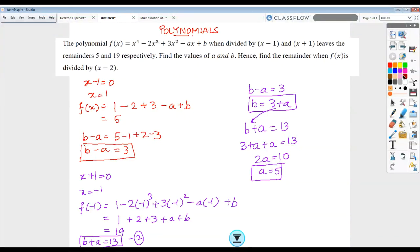I have one value of a here, and now I can substitute this value of a in any one of these equations. For instance, if I was working with b minus a equals 3, I could write b minus 5 equals 3, and b comes out to be 8. This is how I get the values of a and b.